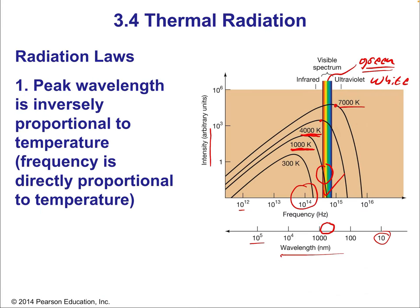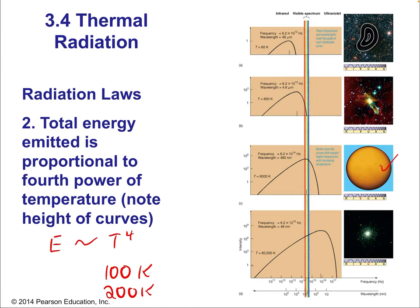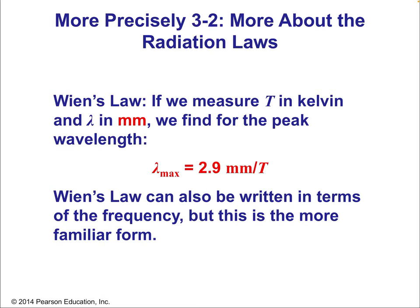These are the two laws in word form: law one is that the color matches the peak — Wien's law — and law two is the proportionality to the fourth power of temperature. Now the actual formulas: Wien's law is the relationship between wavelength — represented by the Greek letter lambda — and it equals 2.9 millimeters divided by the temperature. When you use this formula, you plug temperature in in Kelvin, and the wavelength you get will be in millimeters.